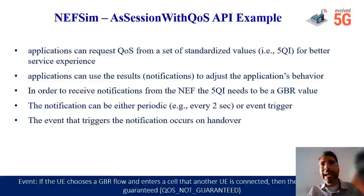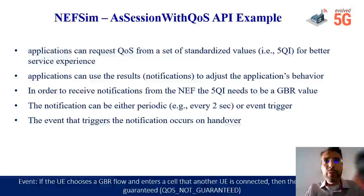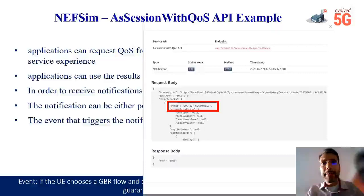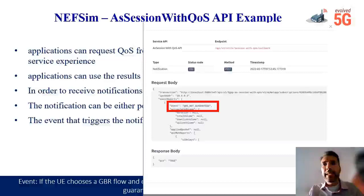The event that triggers the notification occurs, for example, on handover. So if the UE chooses a GBR value and enters a cell where another UE is already connected, then the QoS cannot be guaranteed, and the NEF will report back the 'QoS not guaranteed' value. Here we can see this scenario running — how the NEF simulator reports back the proper event 'not guaranteed'. We can also demonstrate many other scenarios to show how the NEF emulator can assist any application developer in making a 5G-aware application that uses different APIs from the core network to raise awareness of the network conditions and the underlying 5G system.